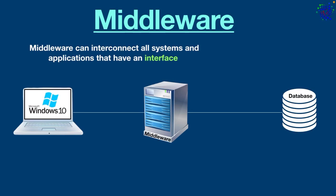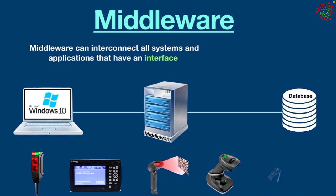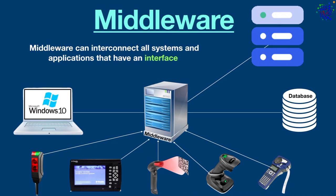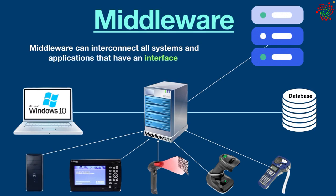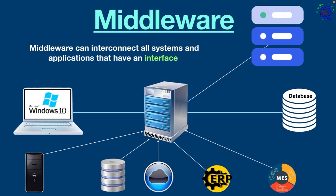Middleware can interconnect all systems and applications that have an interface — this interface is necessary for the connection to work. For example, in operational technology, sensors, machine controls, barcode readers, scanners, and label printers can be connected to higher-level IT systems using middleware and a proper interface. In information technology, all system components such as servers, databases, cloud systems, ERP, and MES systems can be networked with other IT components using middleware, provided they also have the correct interface.